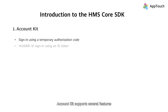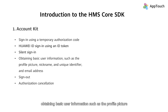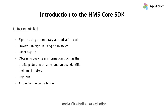AccountKit supports several features, including sign-in using a temporary authorization code, Huawei ID sign-in using an ID token, silent sign-in, obtaining basic user information such as a profile picture, nickname, unique identifier, email address, sign-out, and authorization cancellation.